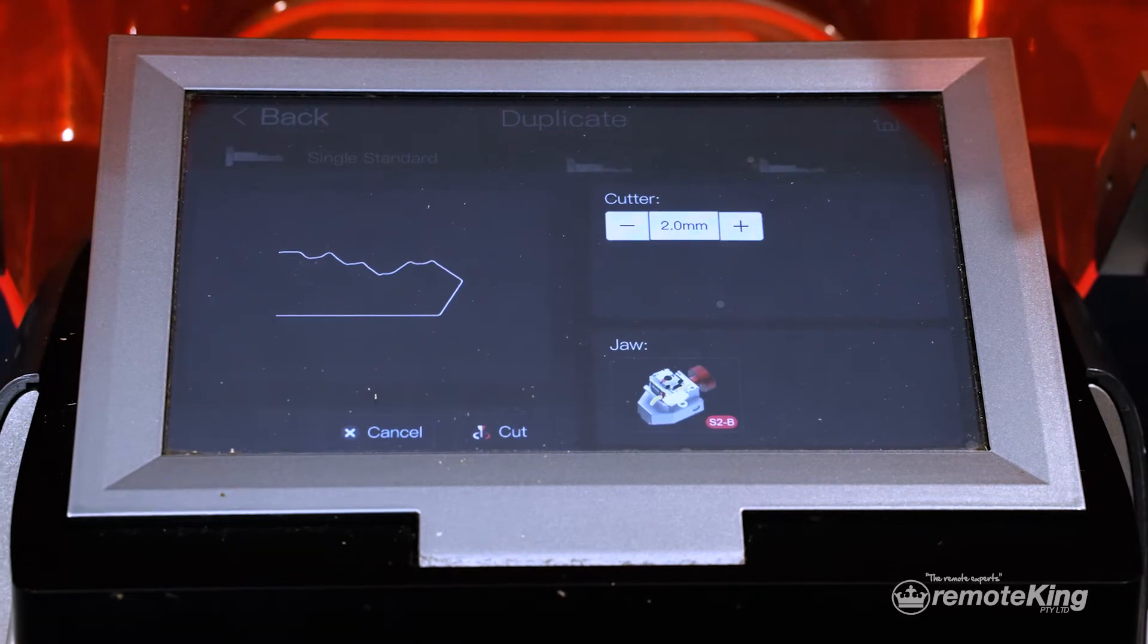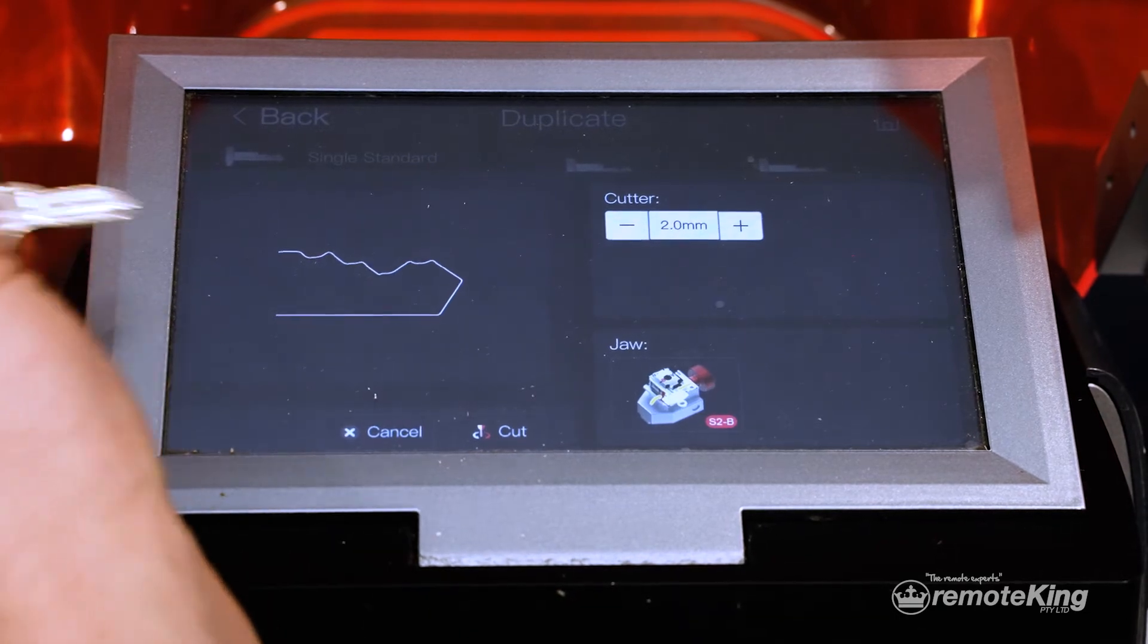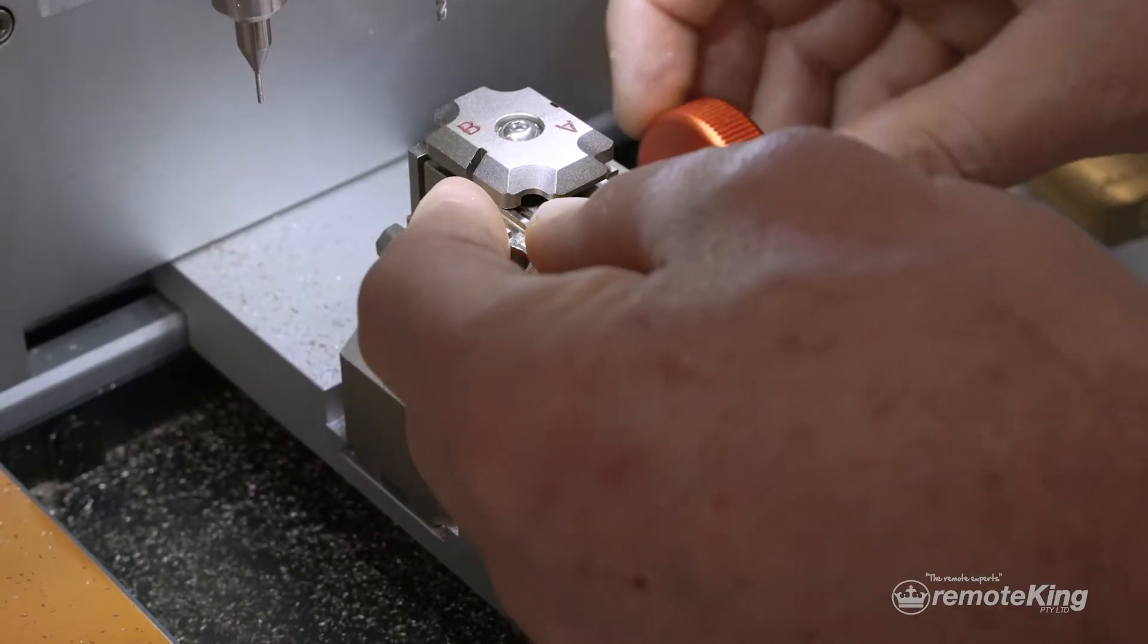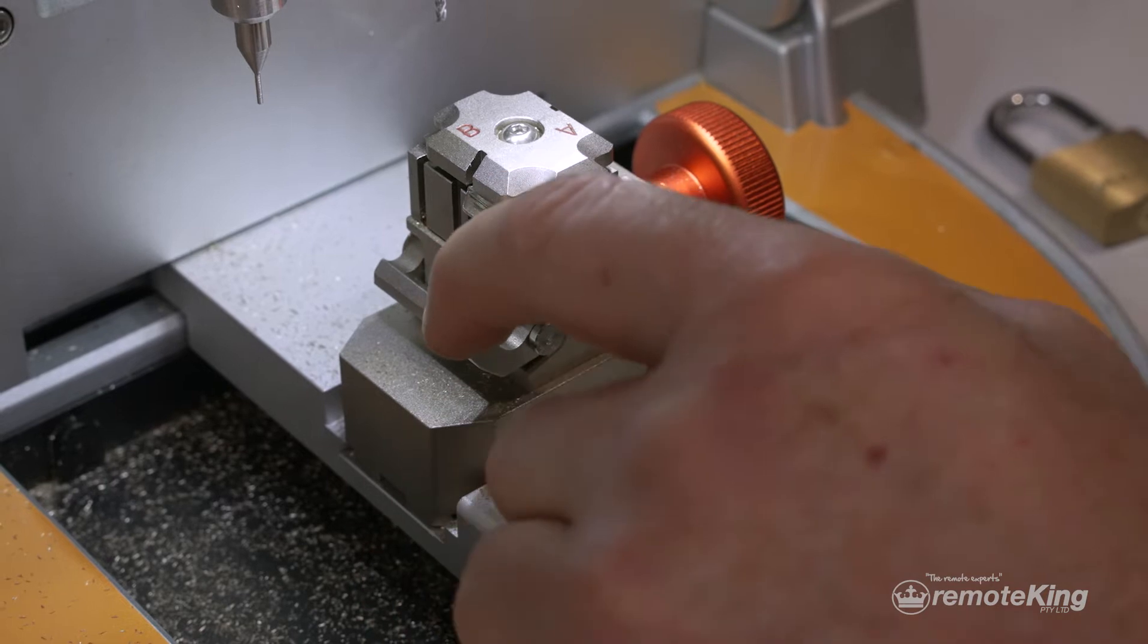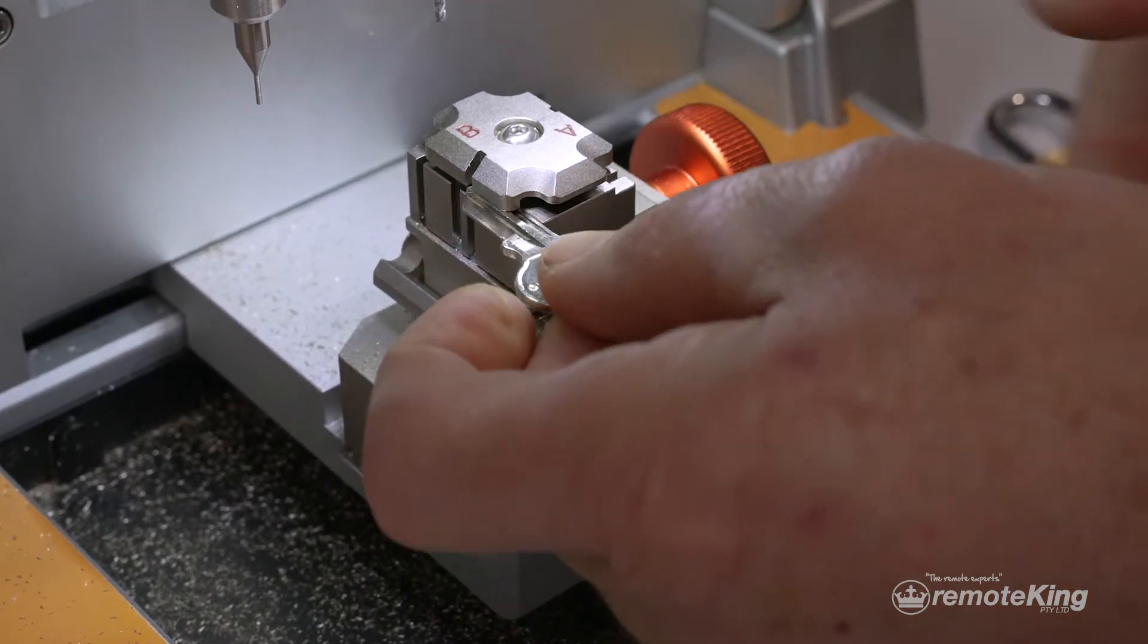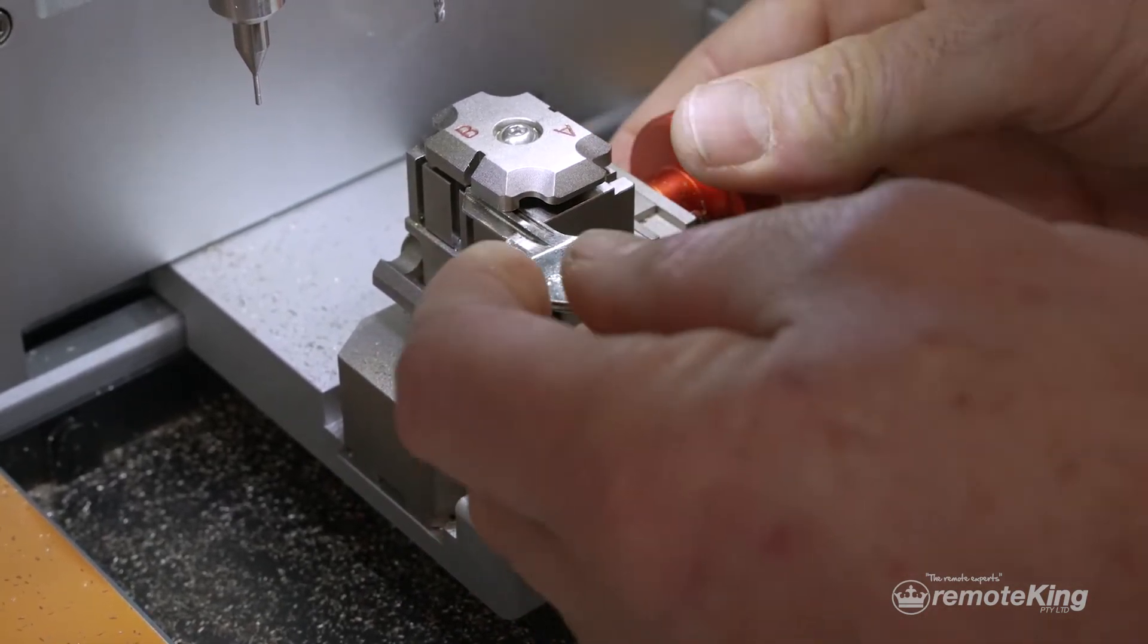That looks correct. Now we grab the blank key, insert it, and line it up off the shoulder, remembering to remove the shoulder. What we're seeing here is a bit of movement on these keys.